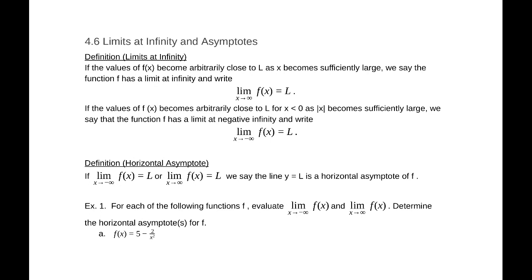Our definition of a limit at infinity begins like this. If the values of f(x) become arbitrarily close to L, some real value L, as x becomes sufficiently large, we say that the function f has a limit at infinity and we write the limit as x approaches infinity of f(x) equals L. If the values of f(x) become arbitrarily close to L for x less than 0, as the absolute value of x becomes sufficiently large, then we say that the function f has a limit at negative infinity and write the limit as x approaches negative infinity of f(x) equals L.